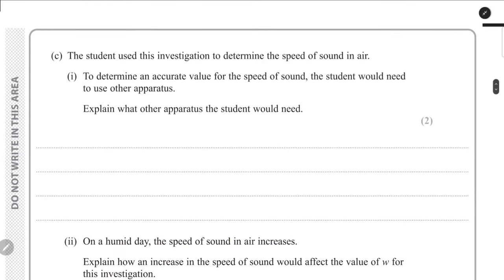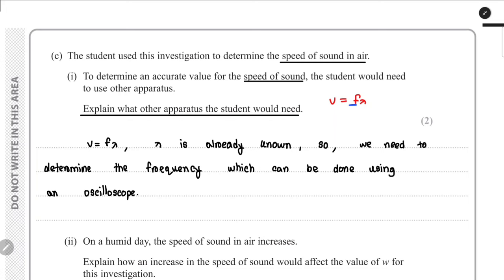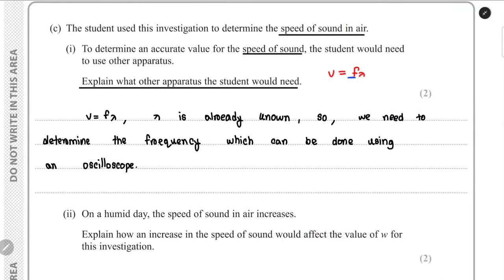For part C, the student uses this investigation to determine the speed of sound in air. We know that v = fλ. We have already found λ. To find the frequency f, we need additional apparatus — an oscilloscope or a frequency meter — connected to the signal generator to measure the frequency.